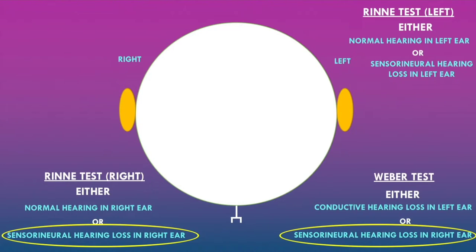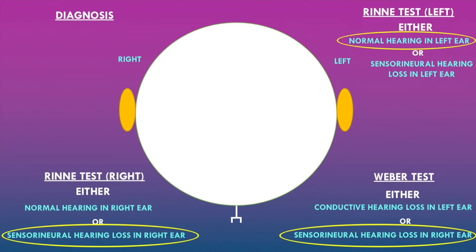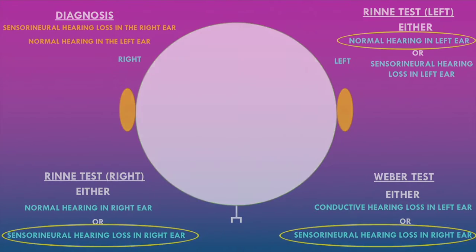The Rinne test in the right ear has confirmed that the lateralization was due to sensorineural hearing loss in the right ear. In the left ear, the Rinne test indicated either normal hearing or sensorineural hearing loss, but since the Weber and Rinne tests confirmed sensorineural hearing loss only in the right ear, there is normal hearing in the left ear. The overall diagnosis is sensorineural hearing loss in the right ear and normal hearing in the left ear.